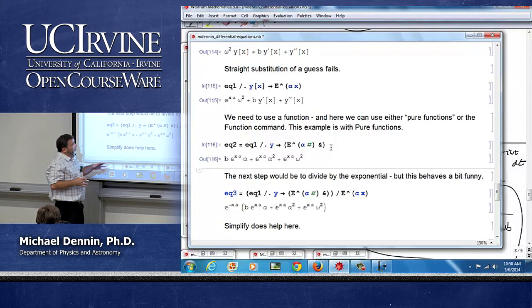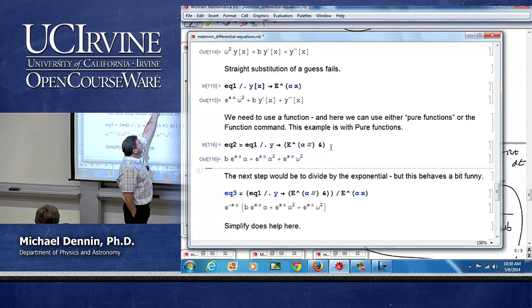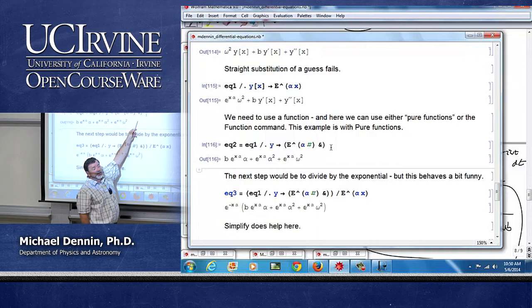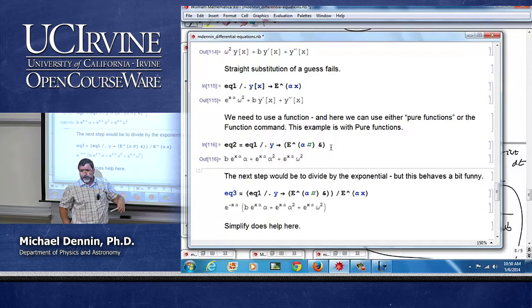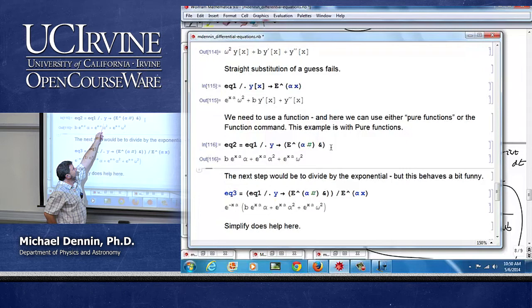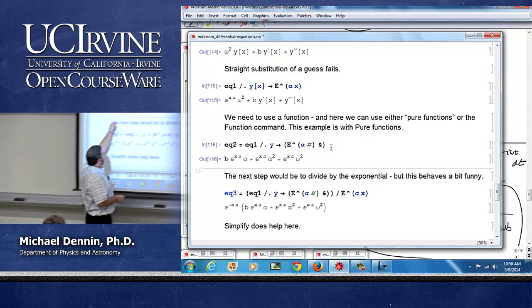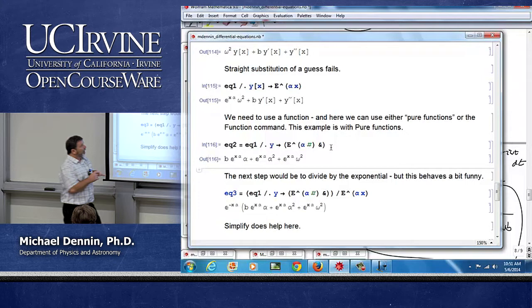And you really need to tell it that, and there's two ways to do it. You can use the Function command, but the more compact and common way is this advanced idea of pure functions. And there may be a couple other places it comes up, but the syntax is a little strange and it's hard to get used to. The syntax involves the pound sign to do the variable, and an ampersand to tell you that you've had a pure function. So this ampersand is telling me that the e to the alpha x is a function. And it's a function of whatever I want to stick here.